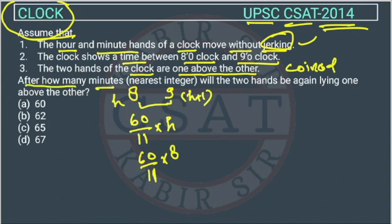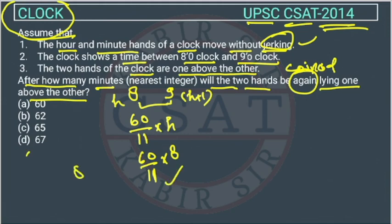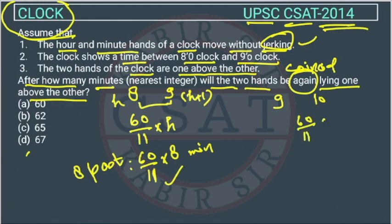After how many minutes will the two hands be again lying one above the other? Once they have met — they met between 8 and 9 at this timing, which is 8 past some minutes. When they will meet again, we will again use this formula. They will meet again at 60 upon 11 into 9. This is again in minutes — 9 past this many minutes.